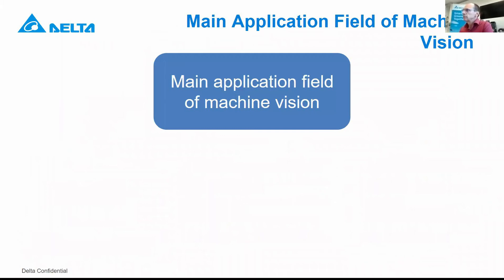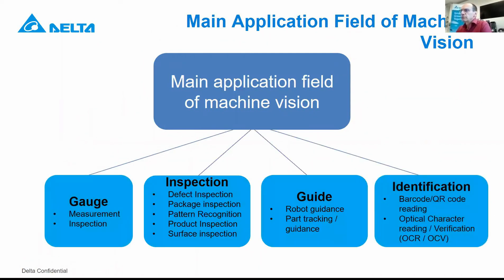Where can you find machine vision? You can find it for measurement and inspection. If you have a bearing, for example, you can measure the outside dimension or the balls inside. For inspection, you can check for defects, packaging inspection, pattern recognition, and product inspection. For guiding, of course, robot guiding — machine vision is most of the time used in combination with a robot — but also part tracking and guidance of packaging on a conveyor belt. For identification: barcode reading, QR code reading, but also reading of letters and characters, for verification to check if your code is right on the package.